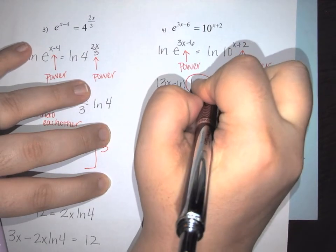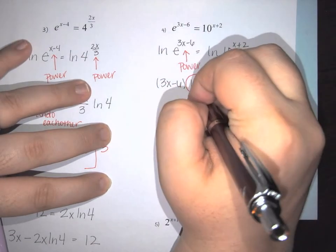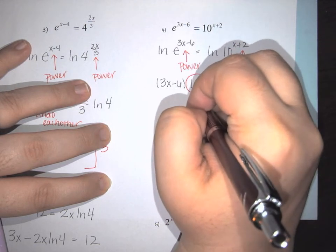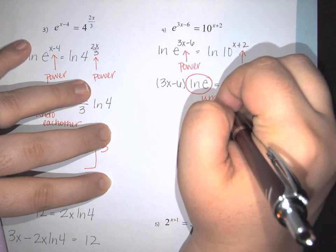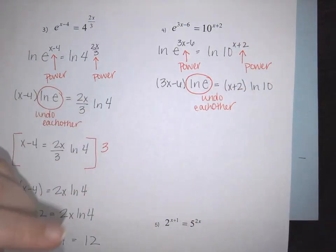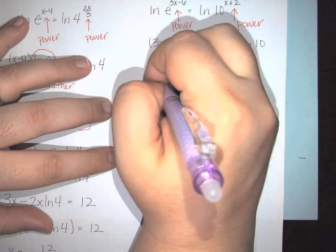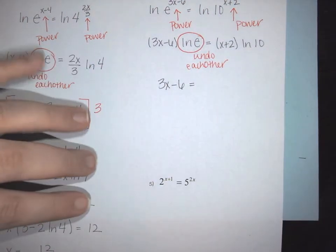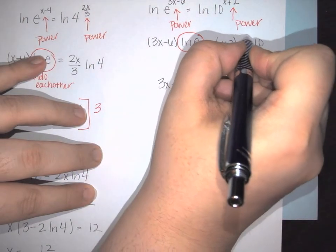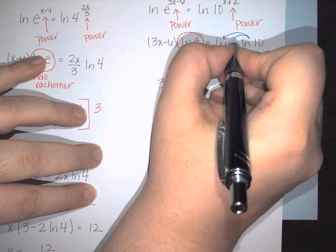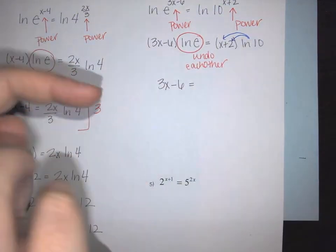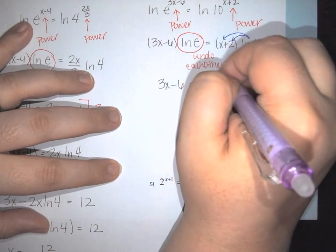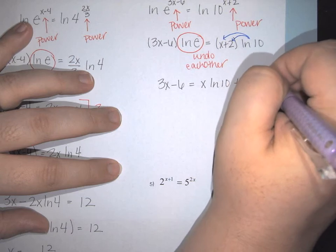Again, the natural log of e cancels. So we have 3x minus 6 equals, and then I distribute the natural log of 10 into the parentheses: x natural log of 10 plus 2 natural log of 10.